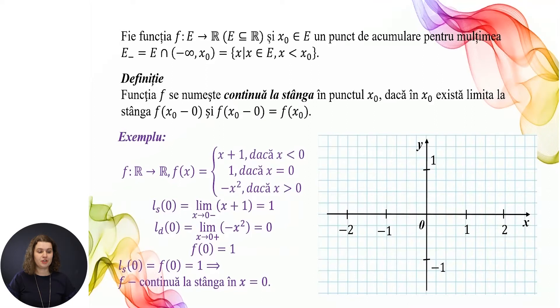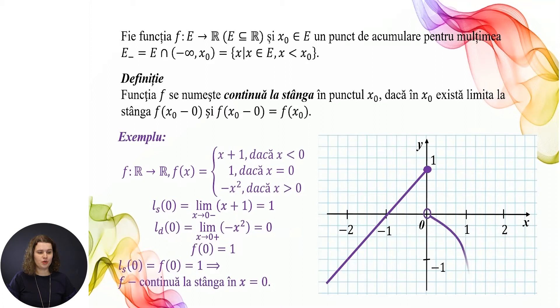Să studiem graficul. Avem sistemul de coordonate. Dacă x primește valori mai mici ca 0, avem o dreaptă x + 1 crescătoare și vedem că în x = 0 primim valoarea 1. Dacă x primește valori mai mari ca 0, avem o parabolă cu ramurile în jos, care începe de la 0. Vedem că funcția este continuă doar la stânga, apoi se întrerupe și primește altă valoare și continuă în calitate de o parabolă.